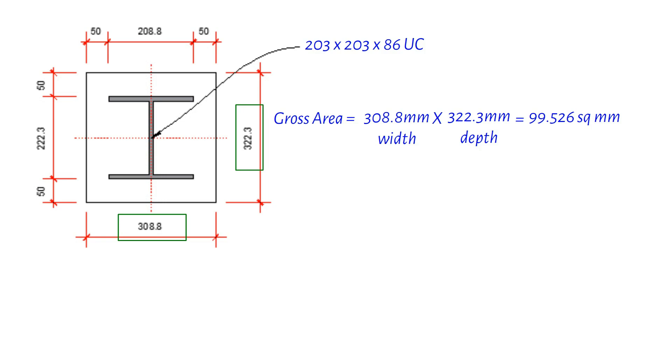Now, let's shift our focus to the steel section. According to our tables, the gross area for a 203 by 203 by 86 UC is 110 square centimeters. However, we need to convert this to square millimeters to maintain consistency in our measurements, which gives us 11,000 square millimeters. Consistency in units is crucial in engineering calculations, but do you know why?